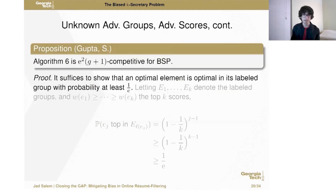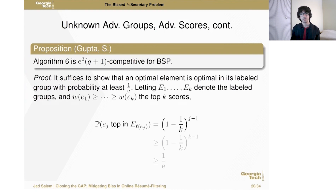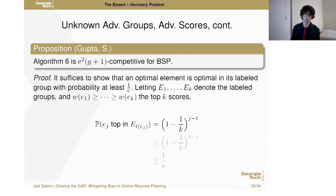To prove this, suppose E1 through EK are the random sets we've generated. The probability that the J-th best applicant is the best applicant in its random group can be bounded by 1/e, and that gives us our competitive ratio.